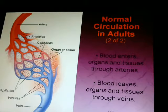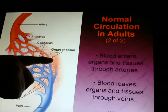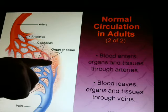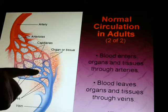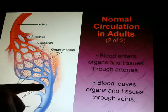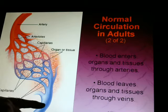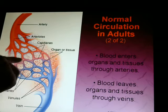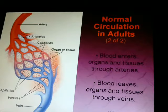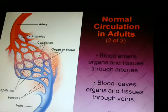Blood enters organs and tissues through arteries and leaves through veins. It travels down arteries to arterioles to the capillary bed, where gas exchange occurs — offloading oxygen and unloading carbon dioxide — then through venules and veins back to the heart to start again. It's a never-ending cycle: air goes in and out, blood goes round and round. Any change in that is a problem.